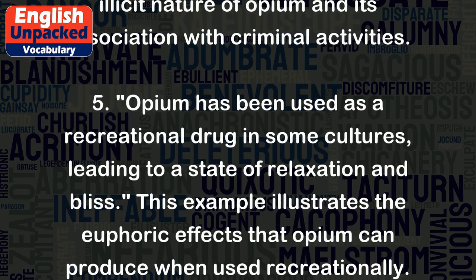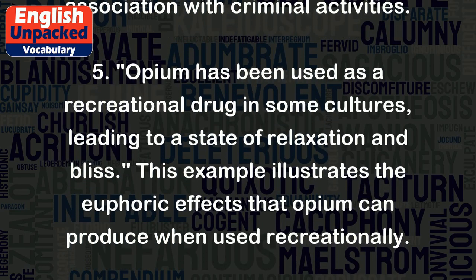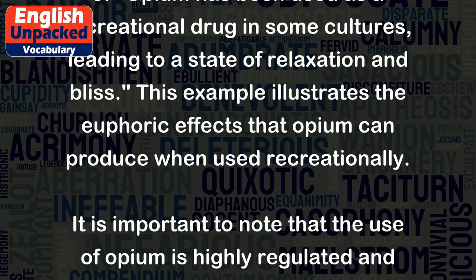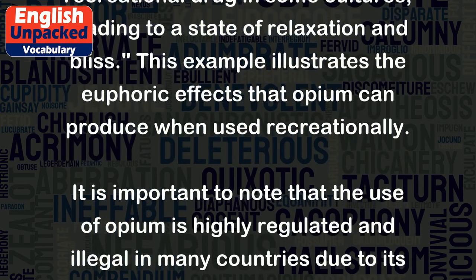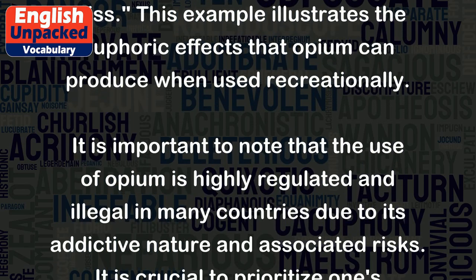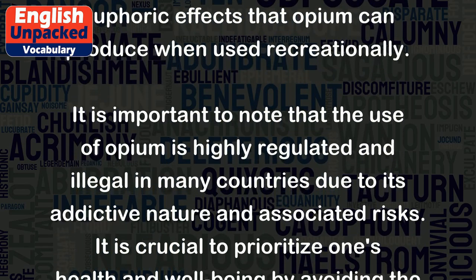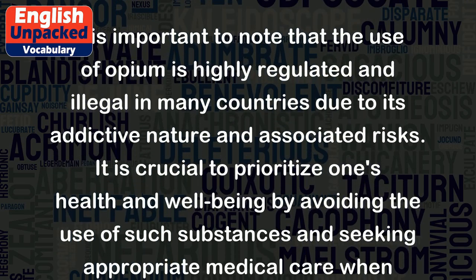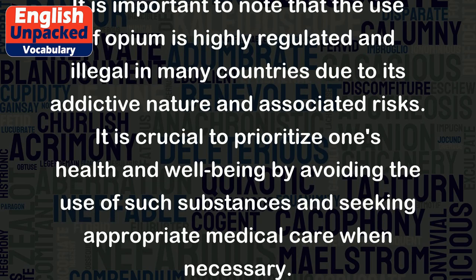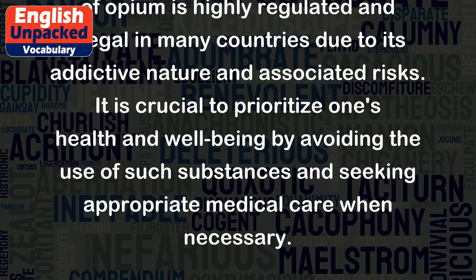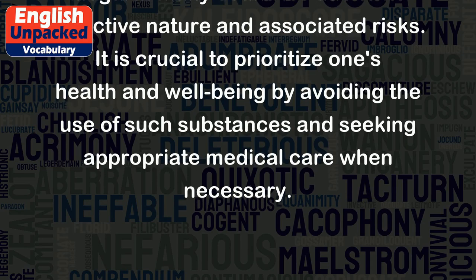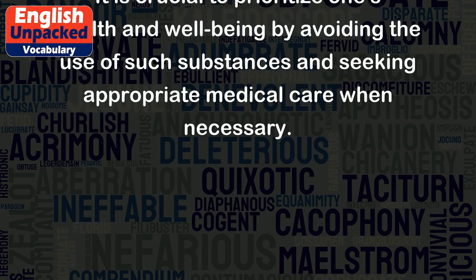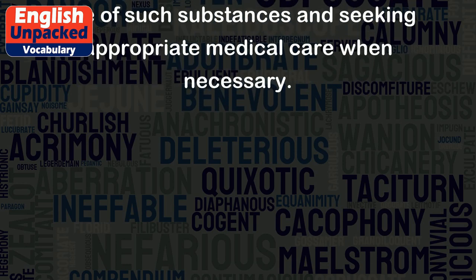5. Opium has been used as a recreational drug in some cultures, leading to a state of relaxation and bliss — illustrating the euphoric effects that opium can produce when used recreationally. It is important to note that the use of opium is highly regulated and illegal in many countries due to its addictive nature and associated risks. It is crucial to prioritize one's health and well-being by avoiding the use of such substances and seeking appropriate medical care when necessary.